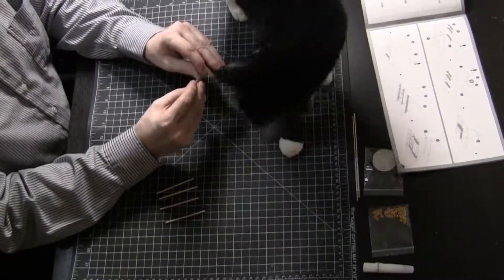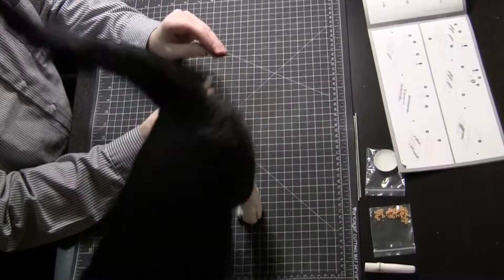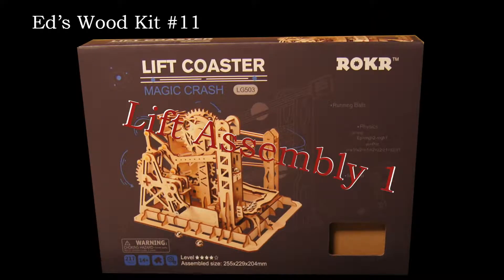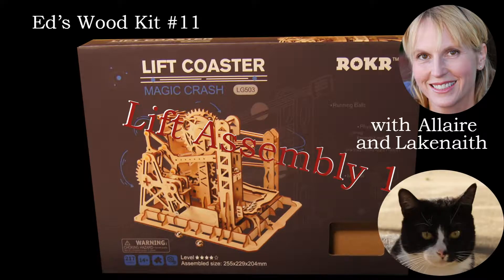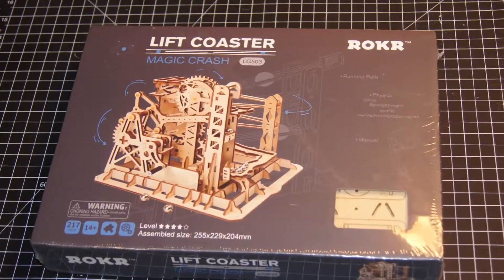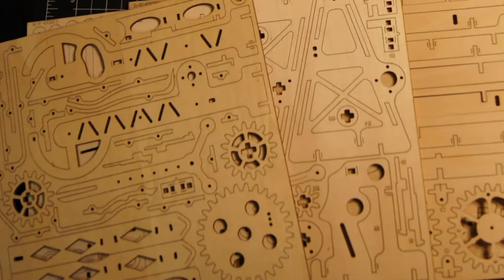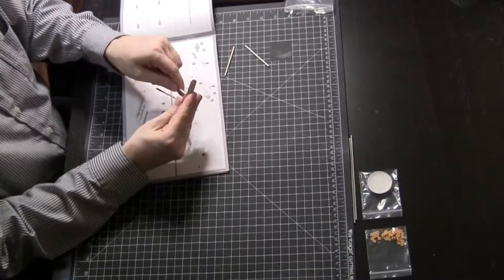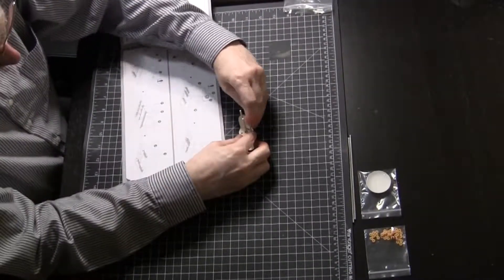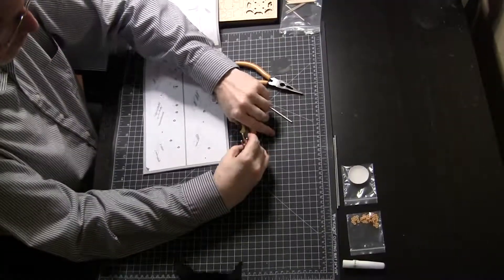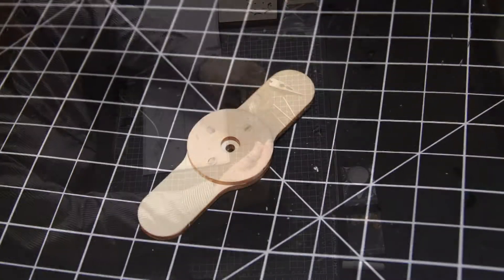You ready for another episode? Hello! Welcome to the start of another project. Today we are starting the Lift Coaster Marble Drop from Rocker. The first piece you will build is an oval tool used for measurement and to push discs on rods later in the project.